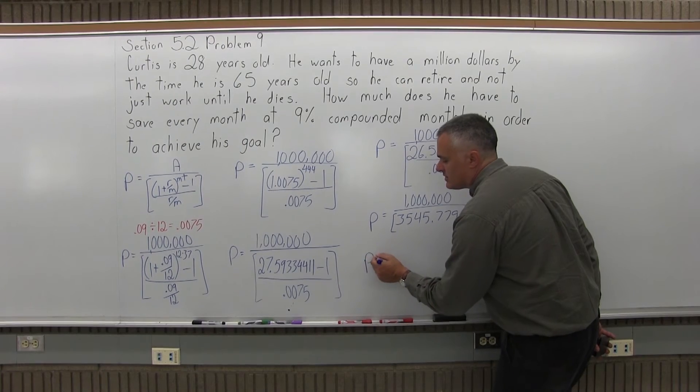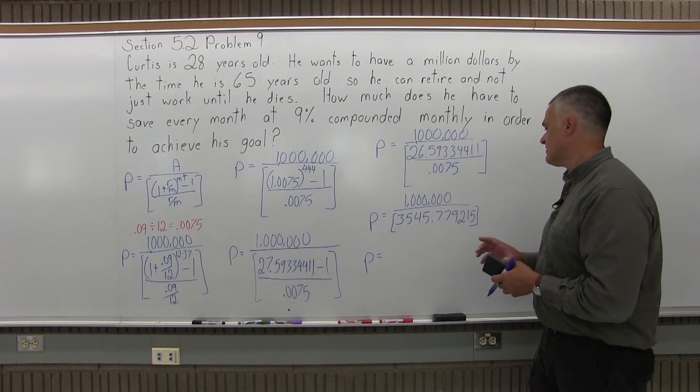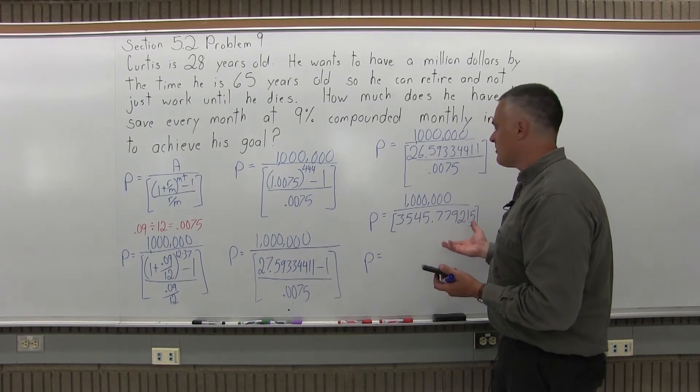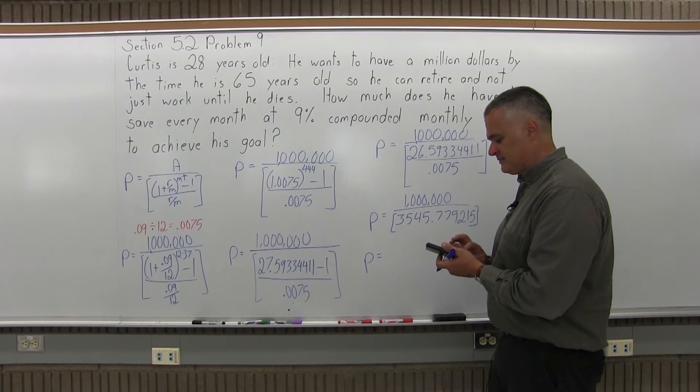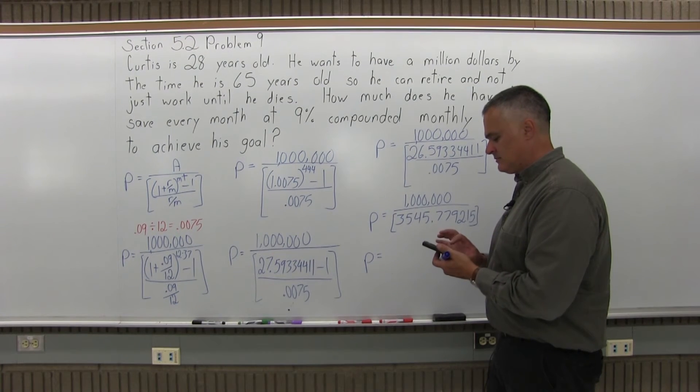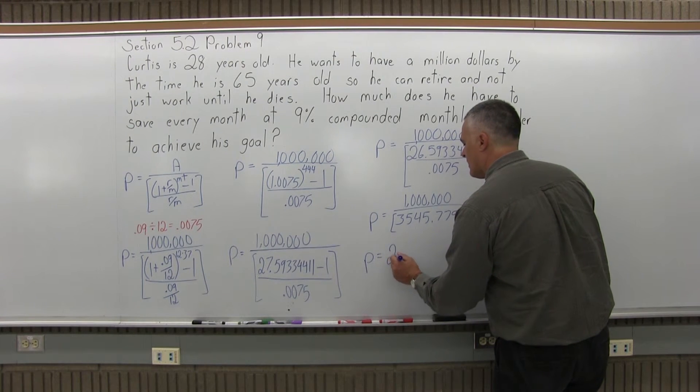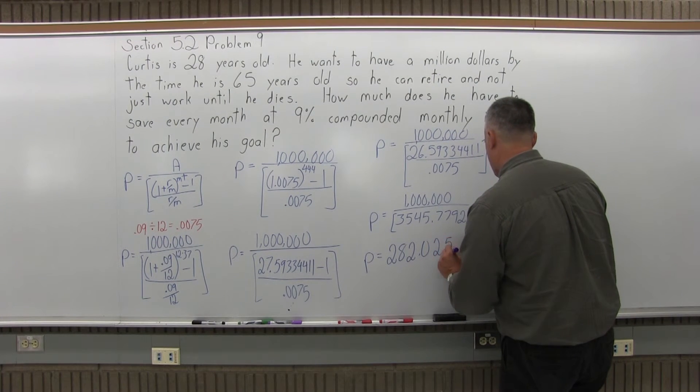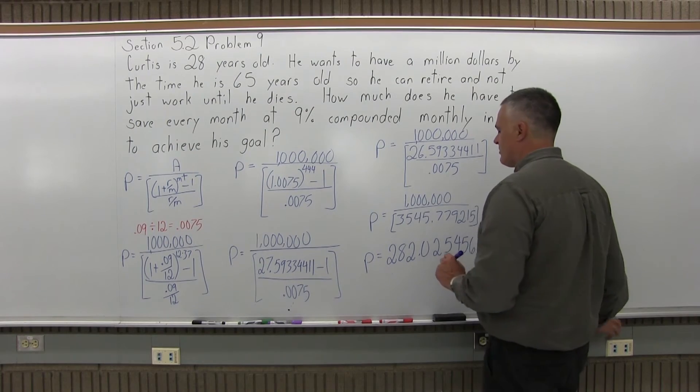And I always say, you can just clear the screen and enter 1,000,000 divided by 3545.779215. But why clear the screen to enter the same number again? Save it in your memory, and then do 1,000,000 divided by recall memory. It's much easier.